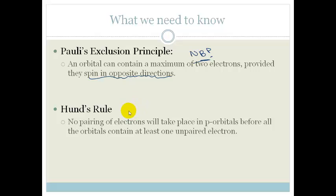The next rule that we need to learn. Also, we have to learn it. Study it for exams. They like to ask it. Hund's rule. It says no pairing of electrons will take place in a p orbital before all the electrons contain at least one unpaired electron.